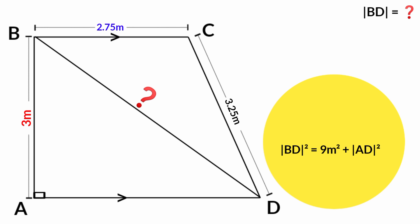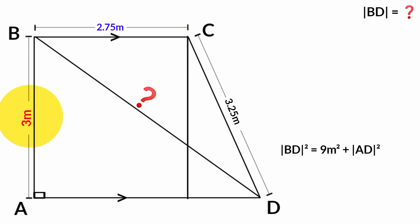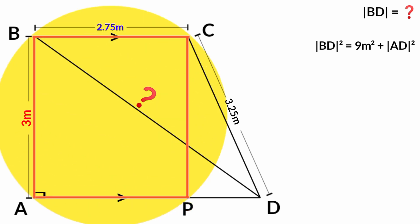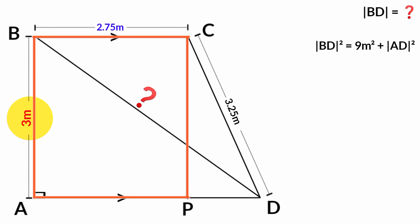If we draw another line from point C that is parallel to line AB and label the point it touches as P, we are going to have a rectangle ABCP. We know the opposite sides of a rectangle are equal in length — so this side and this side are congruent, meaning this side is also 3 meters.